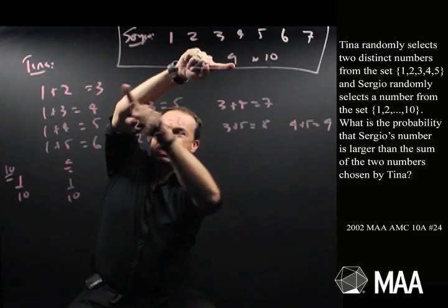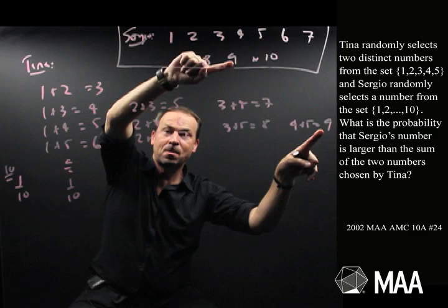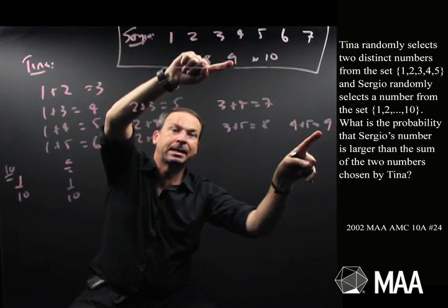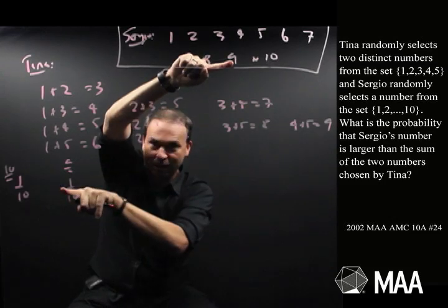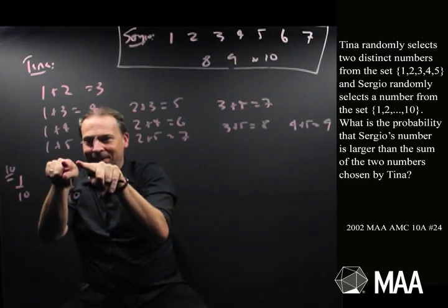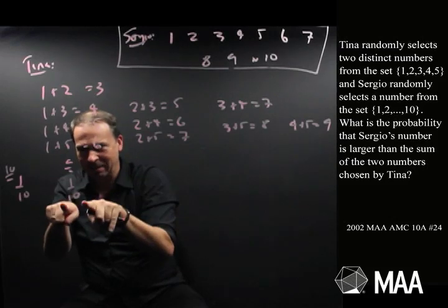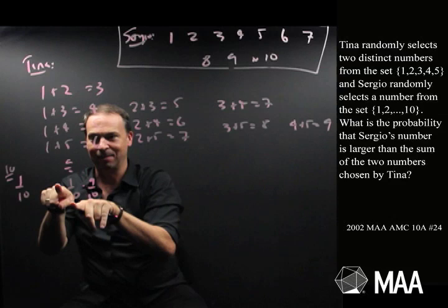of which 9 of them are smaller than 9, and this final one is 9. Sergio won't beat Tina when Tina gets a 9. So, that means, nine-tenths of the time, or this one-tenth of the time, it seems crazy, Sergio wins. So, in this situation, this one-tenth of the time, when Sergio gets a 9, he wins only nine-tenths of the time.